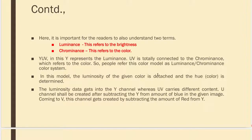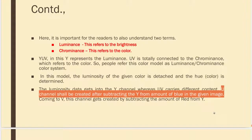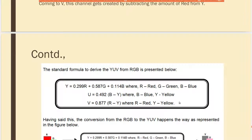The U channel is created by subtracting the Y content — the luminance content — from the amount of blue in the given image. Y can be obtained by the formula: Y = 0.299R + 0.587G + 0.114B, where R, G, B correspond to red, green, and blue respectively.